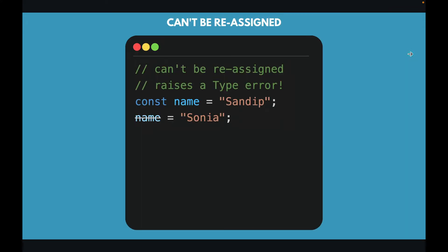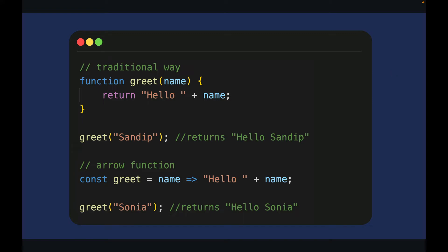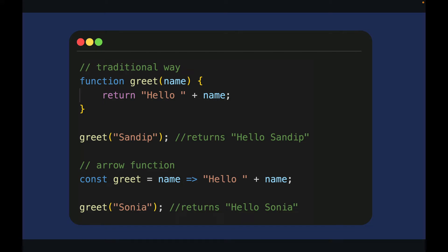There is one subtle difference between const and let: with const you cannot reassign a value. Arrow functions — you remember the traditional way of defining functions using the function keyword. Now there is another way called arrow functions where you can define a function as a variable. If you have only one argument you can skip the round brackets, and if you have only one statement in that function you can even skip the return statement. Arrow functions are the cleanest way of defining functions in the latest version of JavaScript.